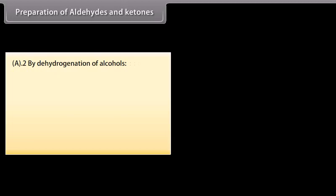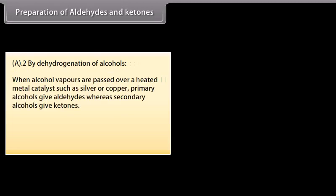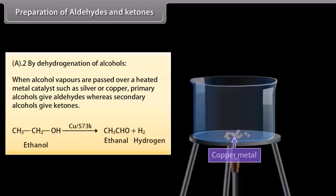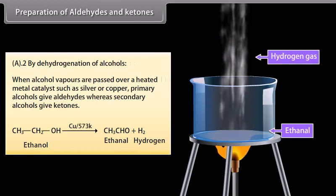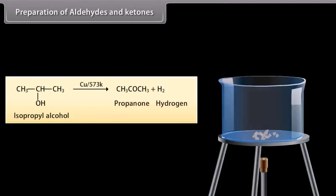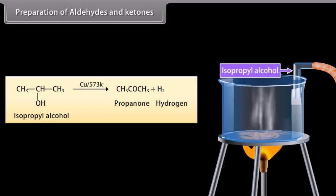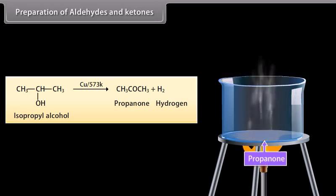By dehydrogenation of alcohols: when alcohol vapors are passed over a heated metal catalyst such as silver or copper, primary alcohols give aldehydes whereas secondary alcohols give ketones. When vapors of ethanol are passed over copper, ethanal is formed and hydrogen gas is released. When vapors of isopropyl alcohol are passed over copper, propanone is formed and hydrogen gas is released.